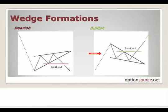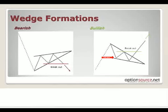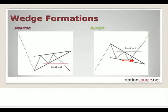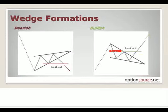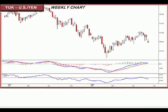In a bullish wedge, you're essentially looking at an inclining market with a price consolidation taking place where your lows are getting lower faster than your highs. What's happening is the market is not quite as willing to take prices down as fast as the highs. So you get this wedge taking place, it forms an apex, and conservatively we look for a breakout.